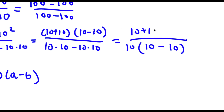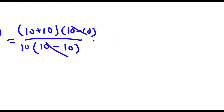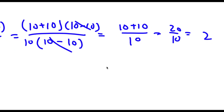So my numerator is still (10 + 10)(10 − 10) over 10(10 − 10). As you can see I have (10 minus 10) in both the numerator and the denominator, so these two can simply cancel out. Now I'm left with 10 plus 10 over 10. Now 10 plus 10 is 20, so I have 20 over 10 which is simply equal to 2. So I've just proved that 0 over 0 is equal to 2.